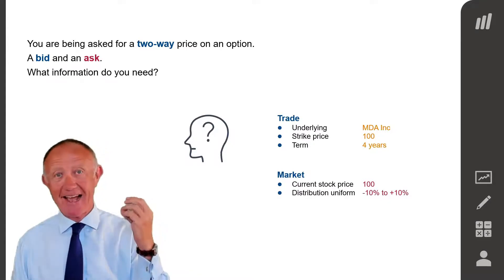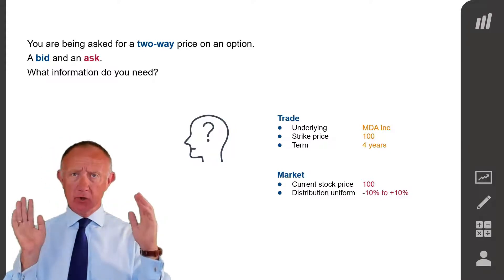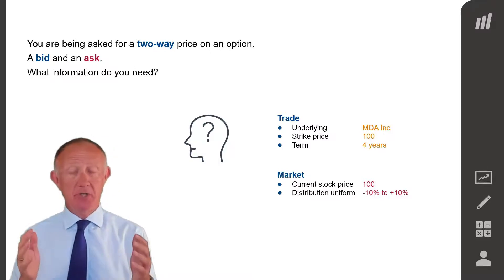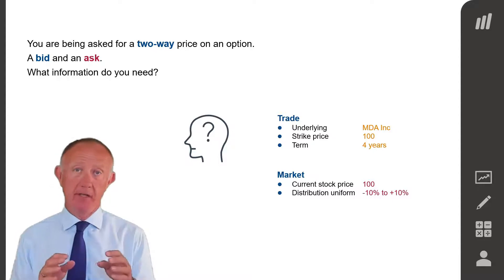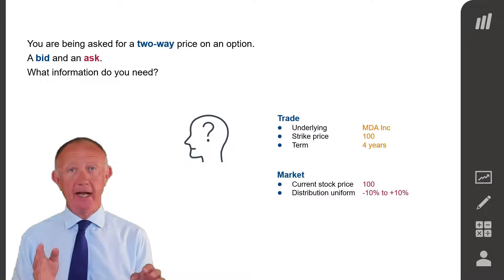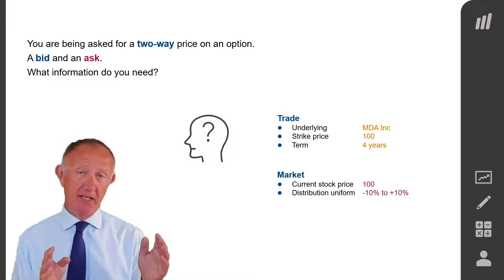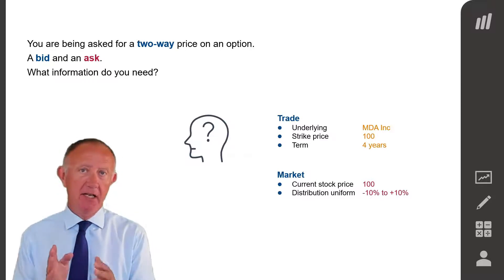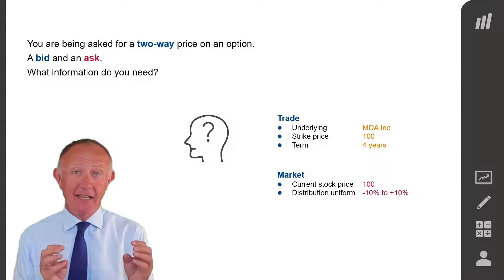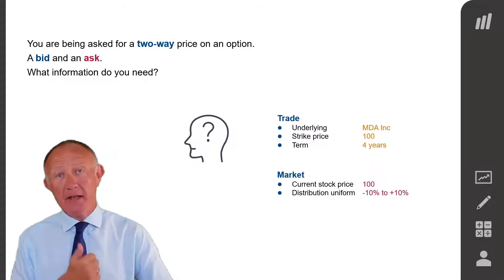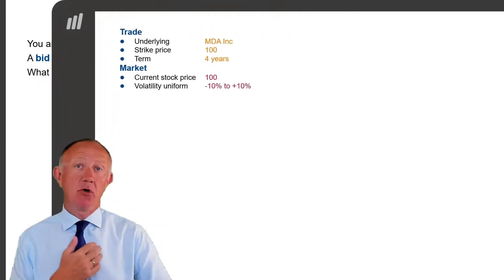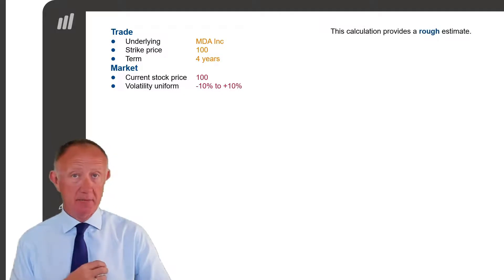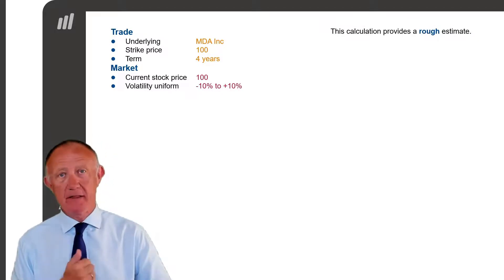So this is an at-the-money option. And to price an option, you need to make some assumptions about the probability distribution for future returns and prices. We are assuming that that distribution is uniform anywhere from minus 10% to plus 10% each year — meaning any price between 90 and 110 is equally likely in the first year. Then you're going to need a model, and the model we're going to use is a binomial model. This will give us a rough estimate as to the fair value of the option.